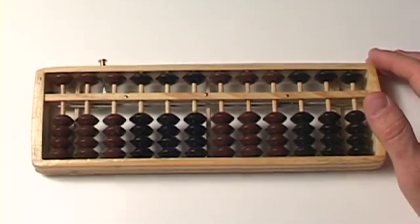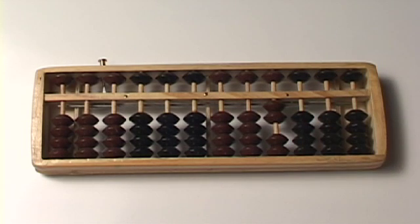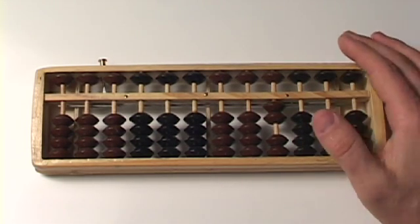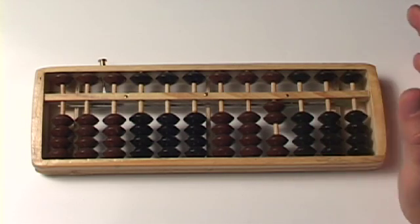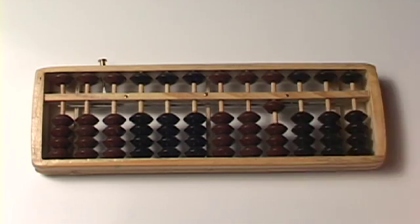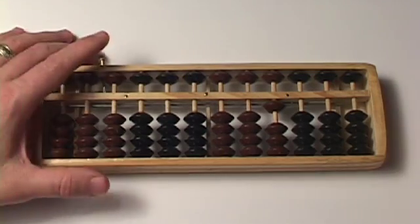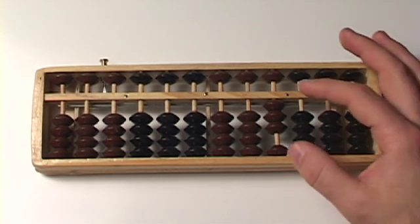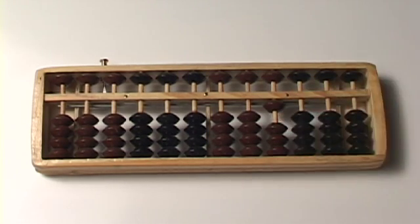Clear the abacus. Let's do two minus one. I know you can do this in your head because you're smart like that. But two beads minus one. So I take away one of the beads and I'm left with one. Three minus two. Take away two beads. And all I'm left with is one. So three minus two is one.